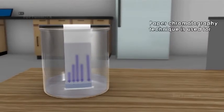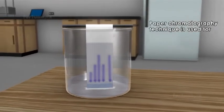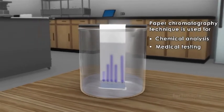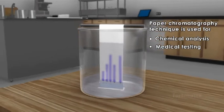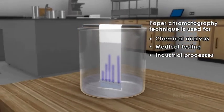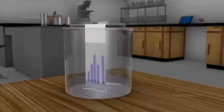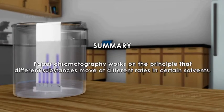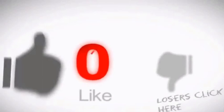The paper chromatography technique is used for chemical analysis in scientific research, medical testing, and industrial processes. Summary: Paper chromatography works on the principle that different substances move at different rates in certain solvents.